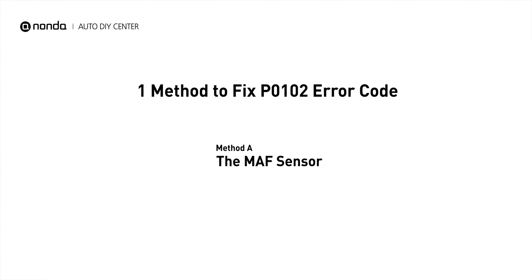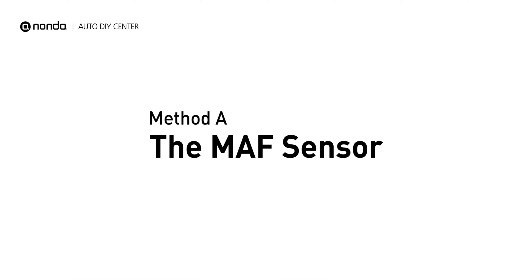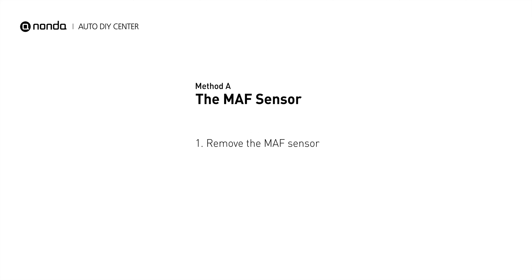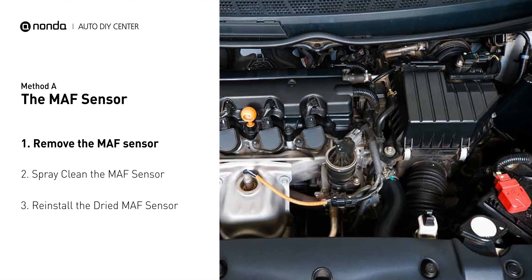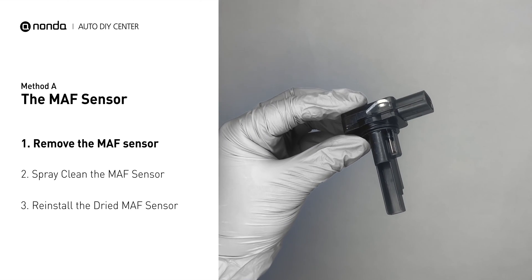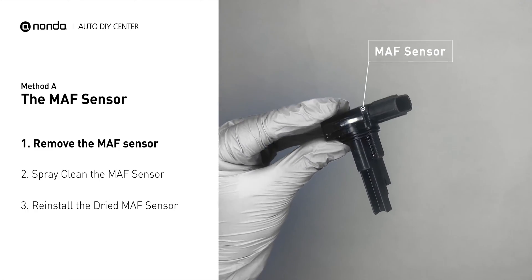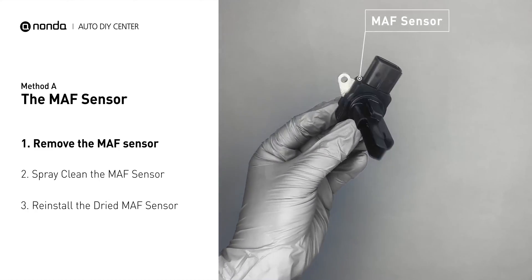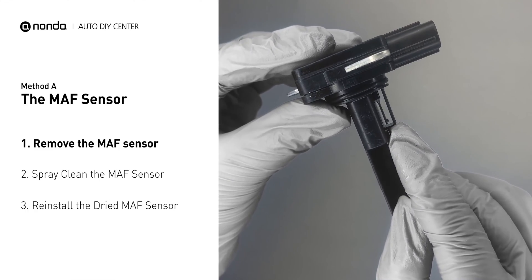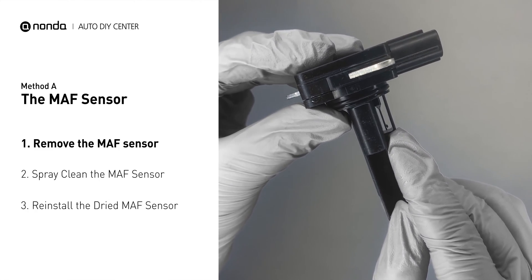Here is one simple DIY method you can try to solve this problem. Method A: MAF sensor. MAF sensors are located between the air filter and the throttle body. Carefully remove the MAF sensor from your car and do a quick inspection. The wire inside often gets dirty and needs to be cleaned.